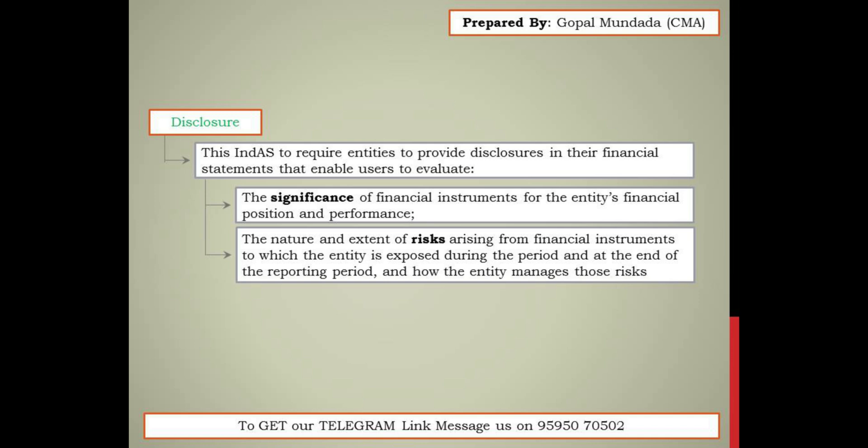One more disclosure required is that the entity also discloses the risks arising from such financial instruments and the entity's planning to tackle such risks. So under Indian AS 107, first we disclose the financial instruments, then the risks related to such financial instruments, and the remedies available to the entity.